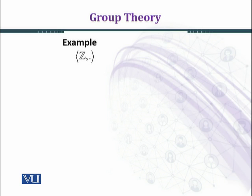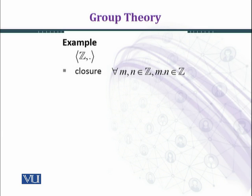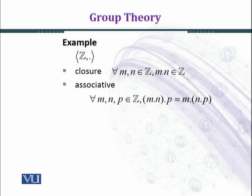Now we consider the set of integers under the binary operation multiplication. For every M and N belonging to Z, M times N belongs to Z. When you multiply two integers, the answer is always an integer, so the closure property holds under multiplication. Similarly, the associative property is also satisfied, because we studied that the set of real numbers is associative under multiplication.